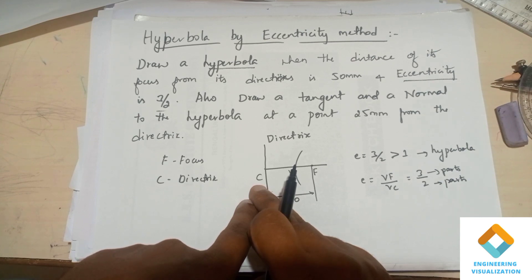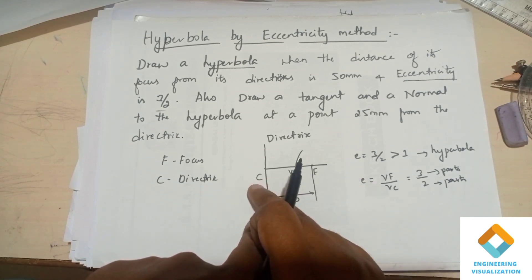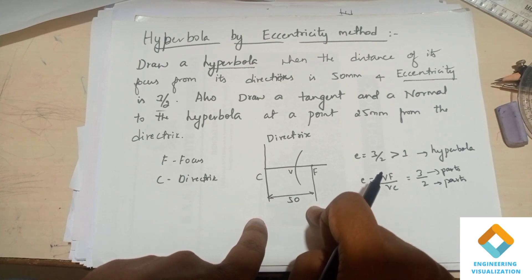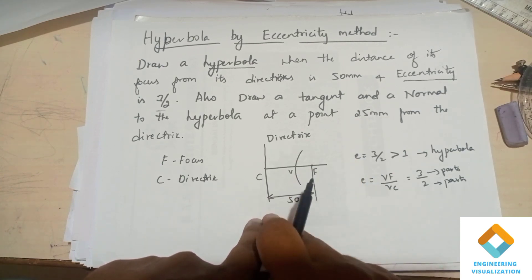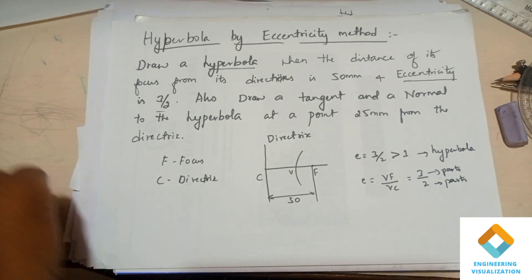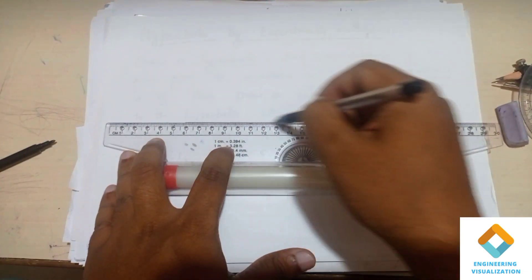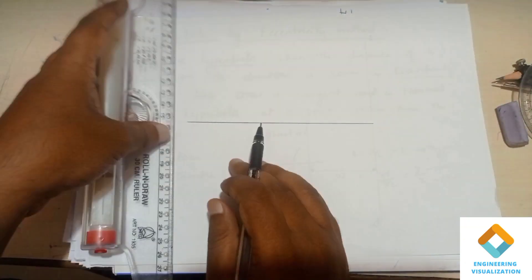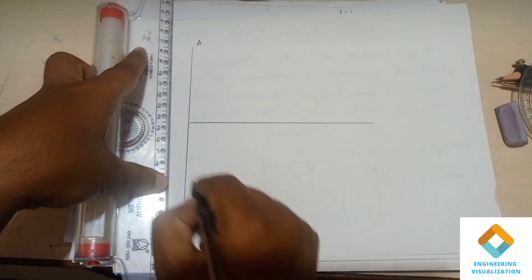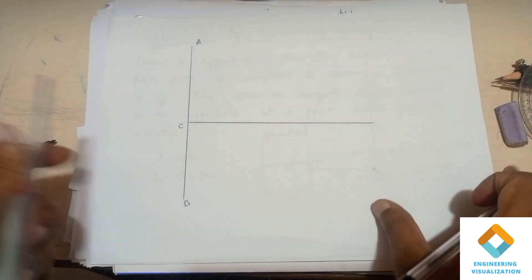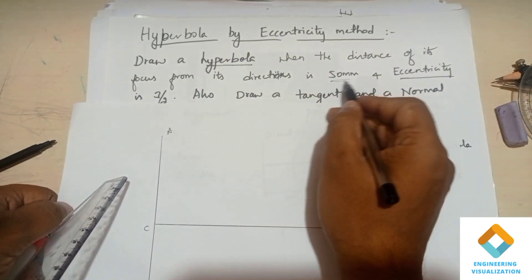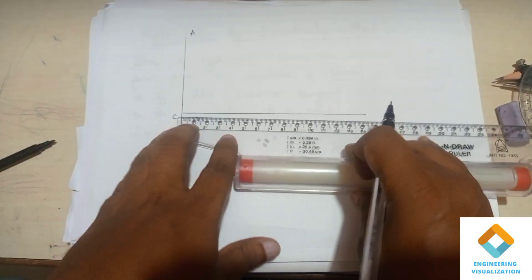The vertical line shown in the diagram is the directrix and the curve drawn is the hyperbola. In between, we have VF having three parts and VC having two parts. We draw one horizontal line at a certain distance, and exactly perpendicular to it we draw the directrix, mentioning it as AB. This is your C point.